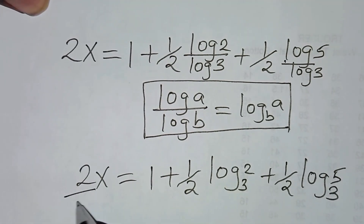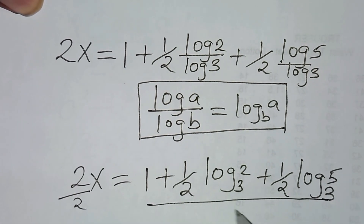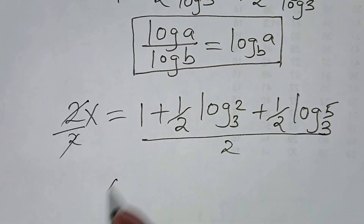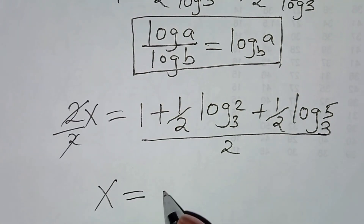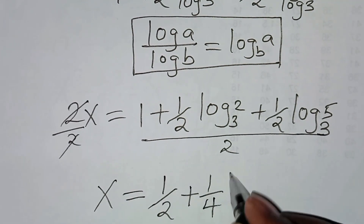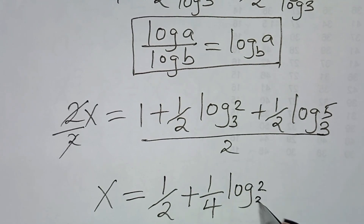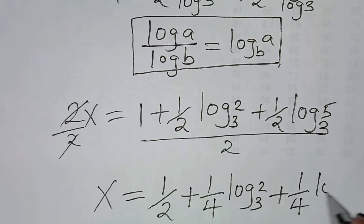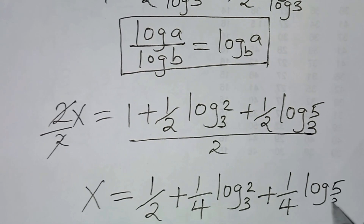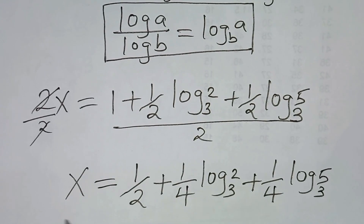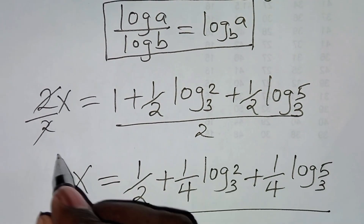Now let's divide both sides by 2, so that the value of x is equal to one-half plus one-quarter times log₃2 plus one-quarter times log₃5. This is the value of x.